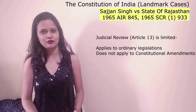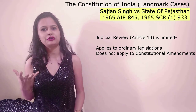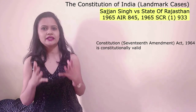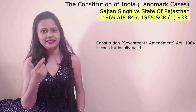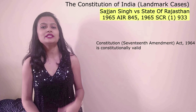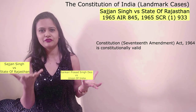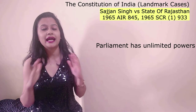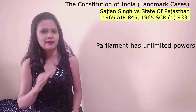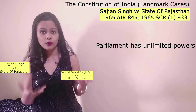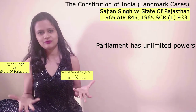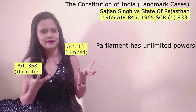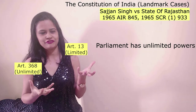Again in this case, the majority decision was in favor of Parliament — that Parliament has the power to make changes in any of the fundamental rights guaranteed under Part 3 of the Constitution. The constitutional validity of the Constitution 17th Amendment Act was upheld by the Supreme Court. The decisions of both Sankari Prasad Singh versus Union of India and Sajjan Singh versus State of Rajasthan are thus quite similar: under Article 368, Parliament has been given unlimited powers to make changes in any article, part, or provision of the Constitution of India, and Article 13 is limited in its application.